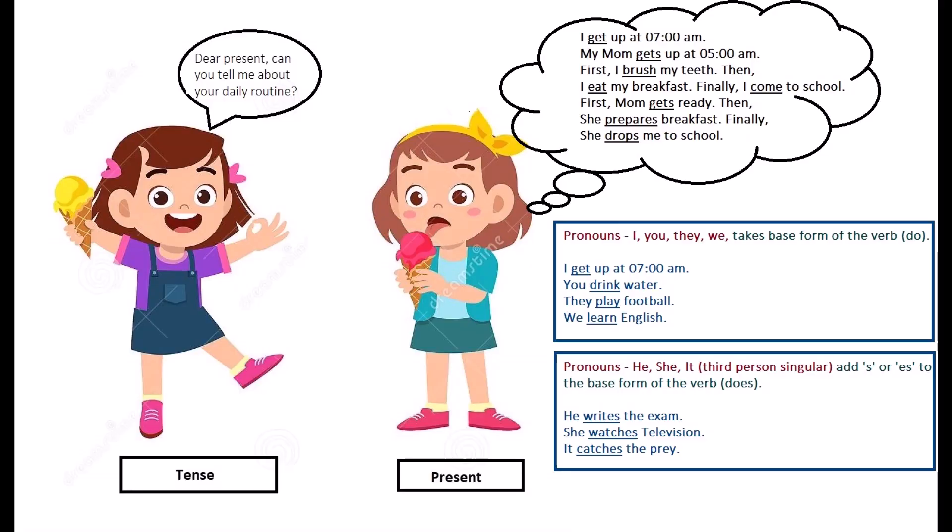See, our tense is coming again with another question. Dear present, can you tell me about your daily routine? Present starts telling: I get up at 7 am. My mom gets up at 5 am. First, I brush my teeth. Then, I eat my breakfast. Finally, I come to school. First, mom gets ready. Then, she prepares breakfast. Finally, she drops me to school.